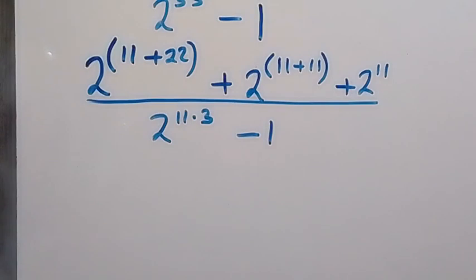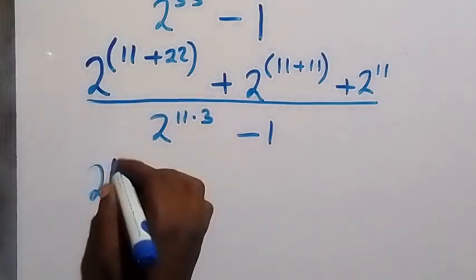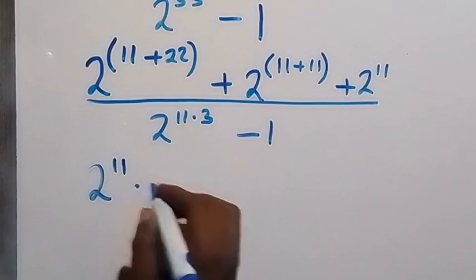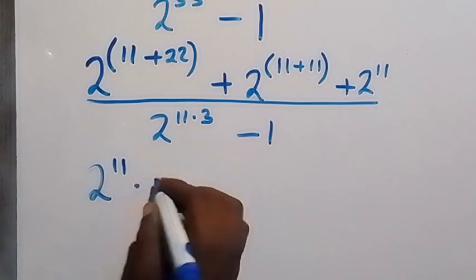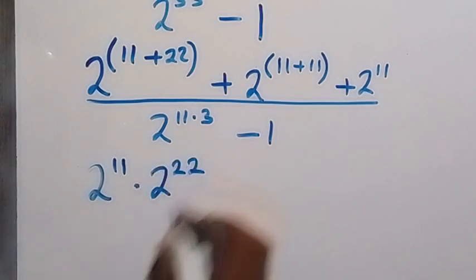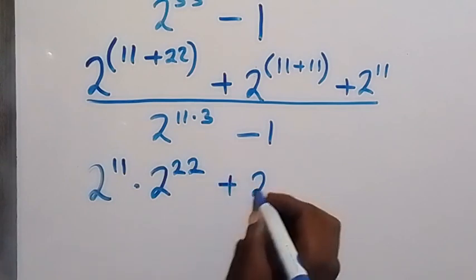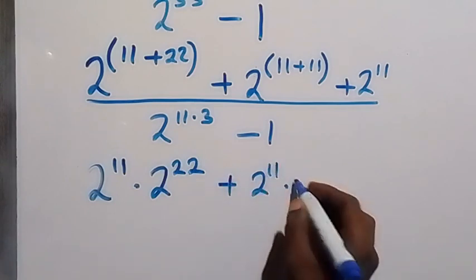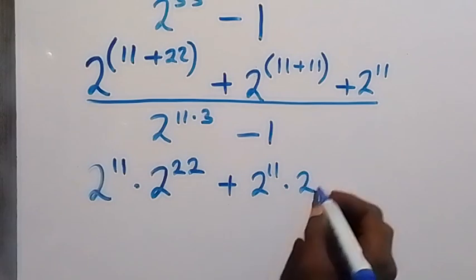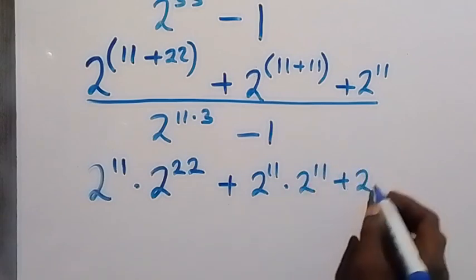We can separate this power now. This will be 2 raised to power 11 multiplied by 2 raised to power 22, plus here we have 2 raised to power 11 times 2 raised to power 11, plus 2 raised to power 11.